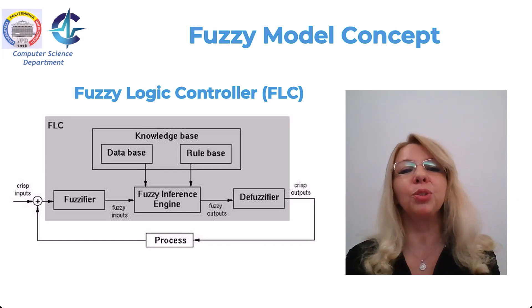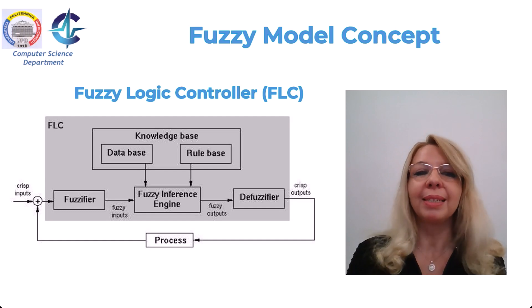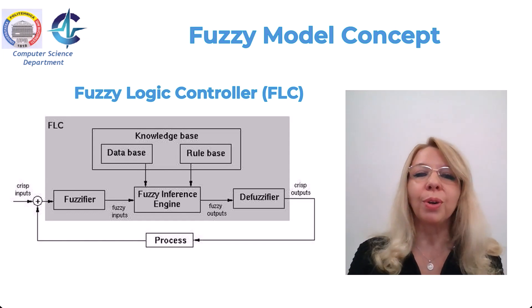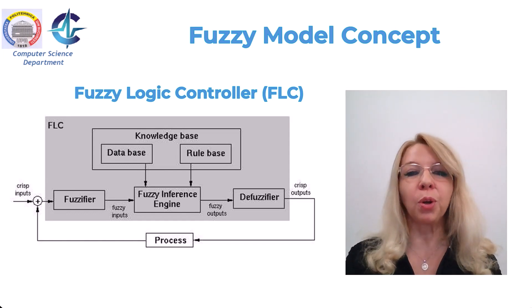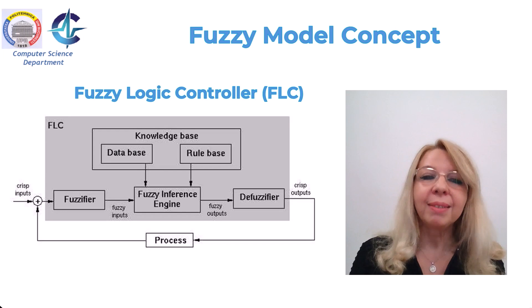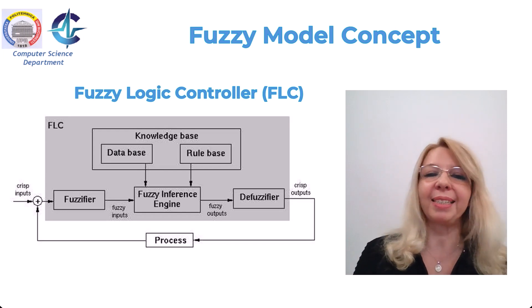Obviously, humans are able to control many complicated systems without making explicit mathematical models of the system. Thus, it is more sensible to model the behavior of a human who controls the process than to model the process analytically as usually done in classical control. Observing the behavior of human operators and interviewing them about their knowledge often allows the derivation of linguistic rules, which can be used to form the rule base.